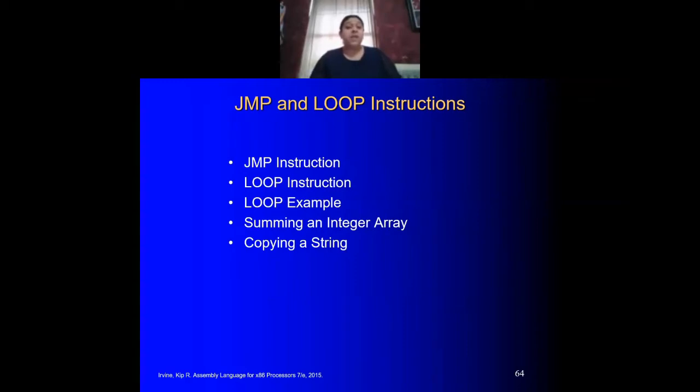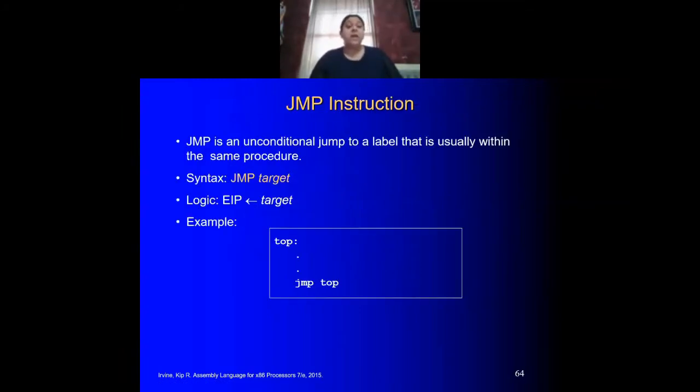There are two main instructions we're going to be using for our loops. One is the JMP or jump instruction, and the LOOP or loop instruction. The jump has a very simple syntax. We call this the JMP, an unconditional jump. That means it'll jump as soon as it finds the keyword JMP to wherever you tell it to go. The syntax is you need to include the JMP and you must have a target, in other words a location to go to, and that target is going to be a label.